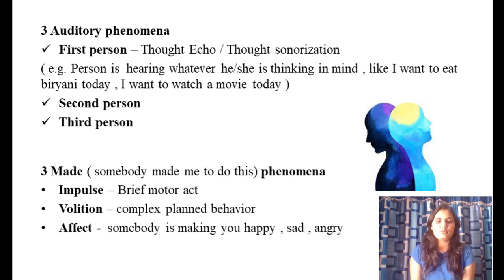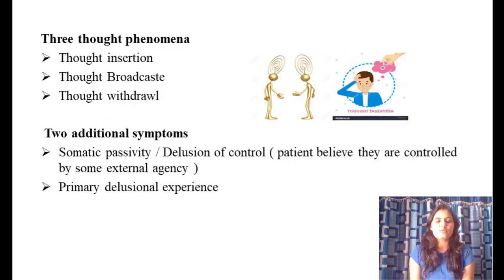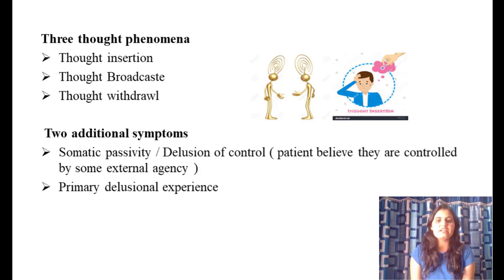The three thought phenomena include thought insertion, thought broadcast, and thought withdrawal, which were discussed in the psychopathology video. The two additional symptoms are somatic passivity — also called delusion of control, where the patient believes they are controlled by an external agency — and primary delusional experience.